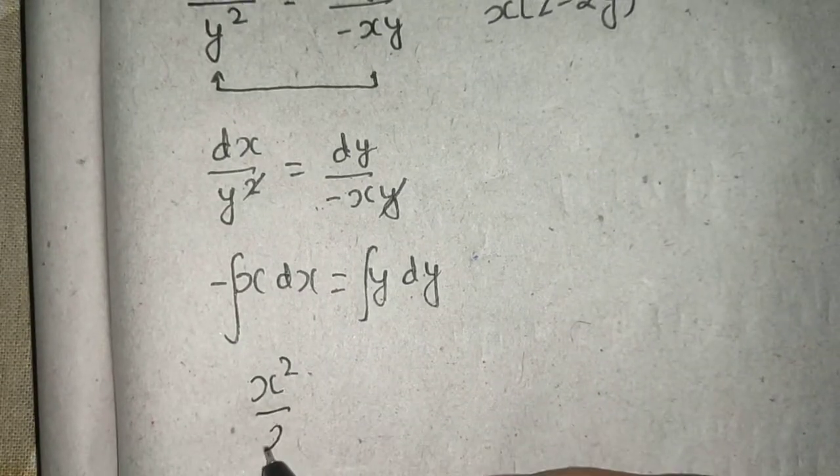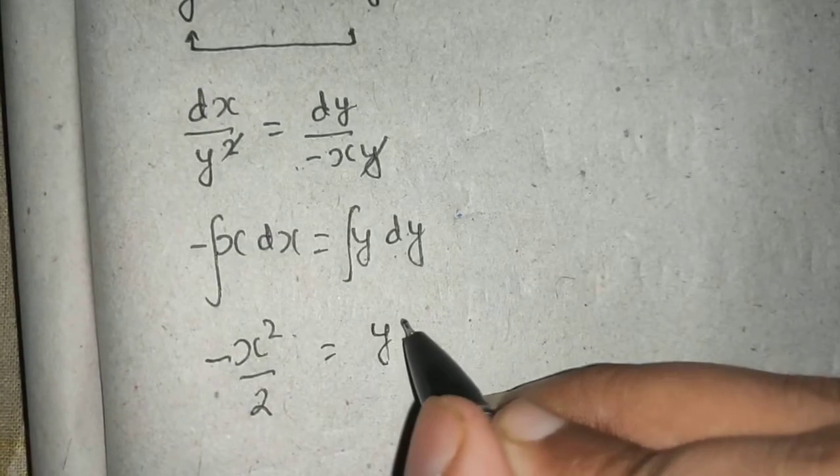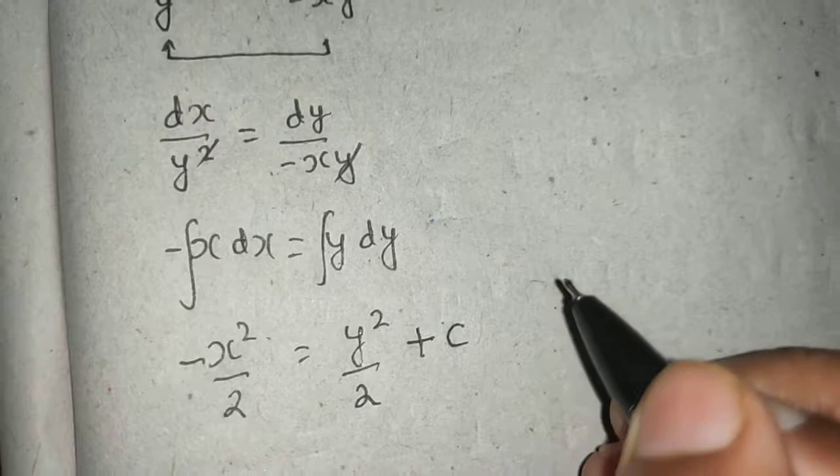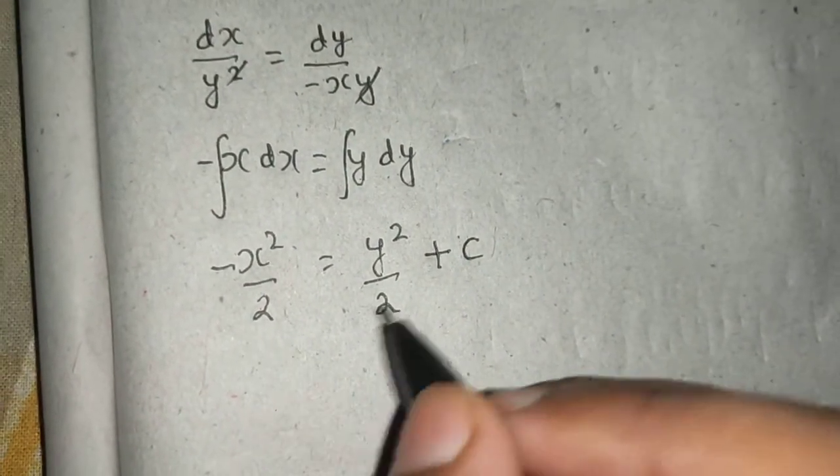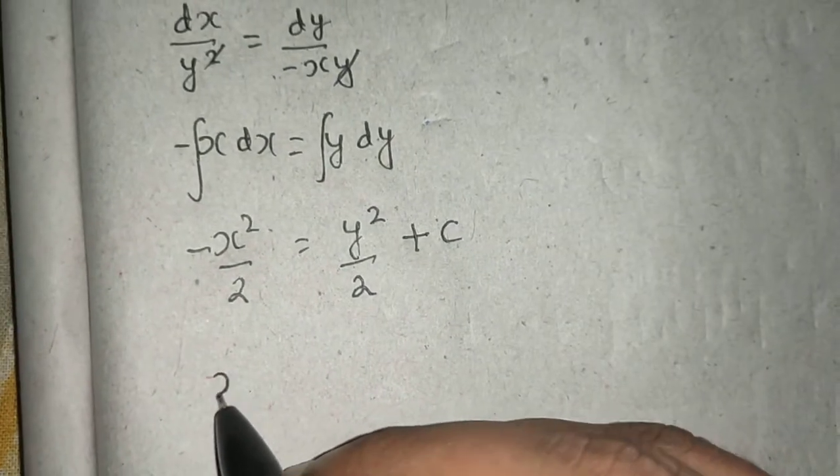If you integrate both sides, integration of x dx is x²/2 with a minus sign, integration of y dy is y²/2 plus a constant c. Now you can take this y²/2 term to this side.